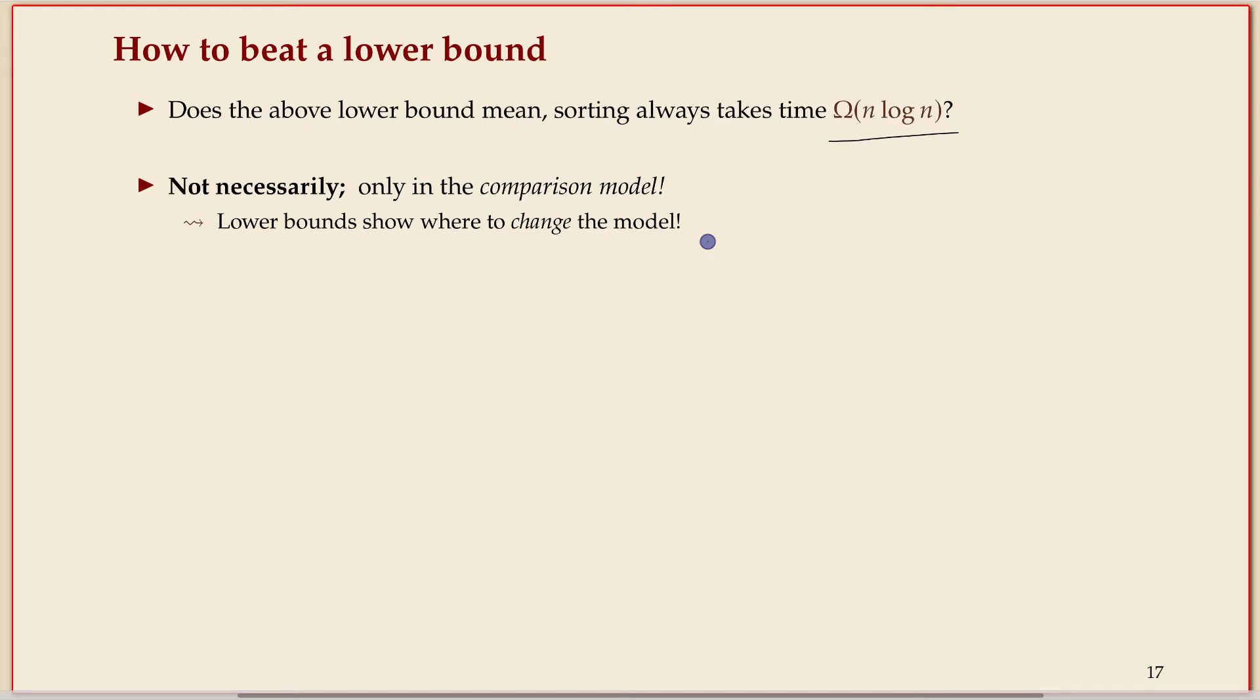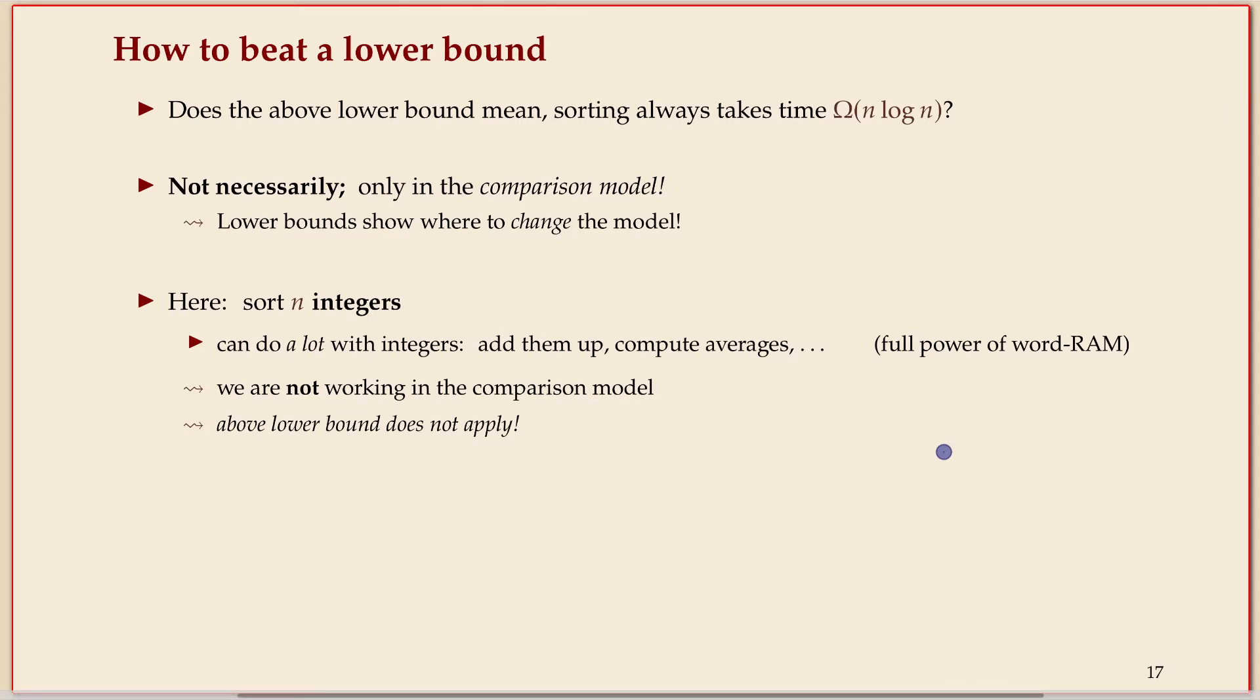But what if we escape this comparison-based model? We haven't seen an example. We've looked at quicksort and merge sort and they were both comparison-based. What else could we do? Let's suppose we sort some specific type like integers, which we can do a lot with. We can add them up, compute averages. The word RAM supports bitwise operations. If we do that, we are outside of the comparison-based model and the lower bound says nothing.